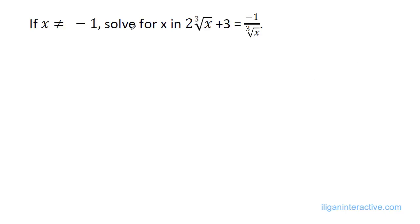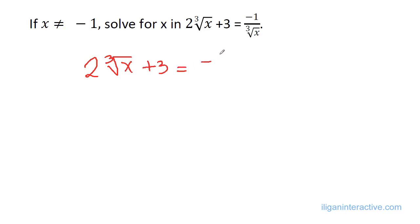If x is not equal to negative 1, solve for x in the equation: 2 times the cube root of x plus 3 is equal to negative 1 over the cube root of x. Let me rewrite it: 2∛x + 3 = -1/∛x.